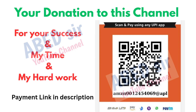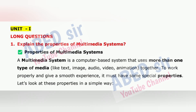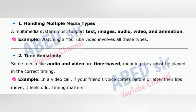Unit 1 Important Long Questions. Long question 1: Explain the properties of Multimedia Systems. A multimedia system is a computer-based system that uses more than one type of media — text, image, audio, video, animation — together. To work properly and give a smooth experience, it must have some special properties. 1. Handling Multiple Media Types: A multimedia system must support text, images, audio, video, and animation. Example: Watching a YouTube video involves all these types.